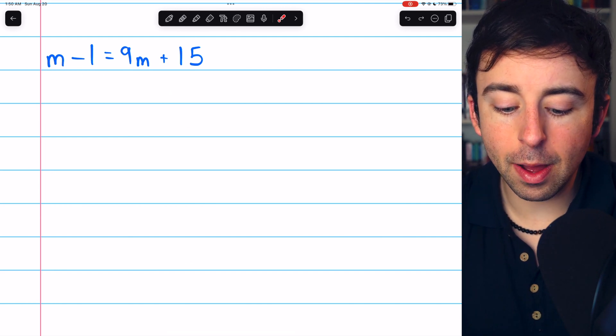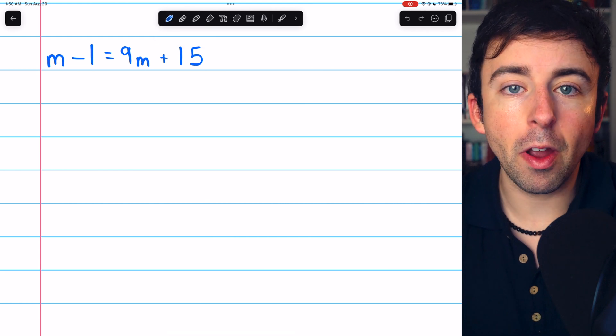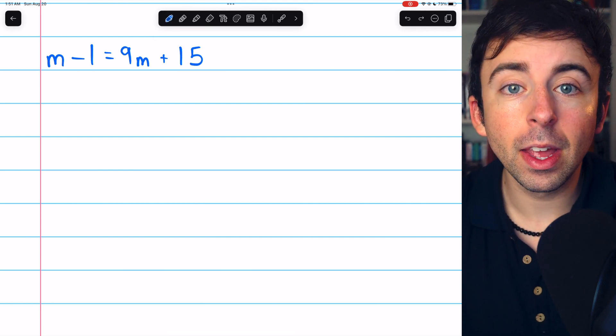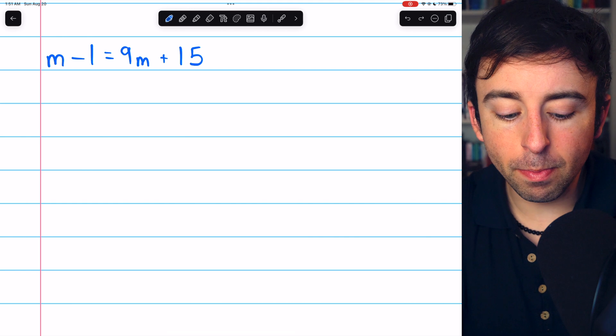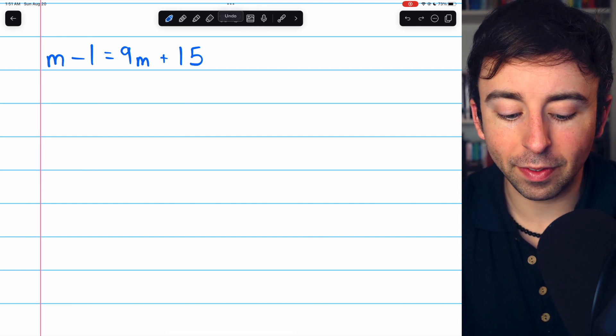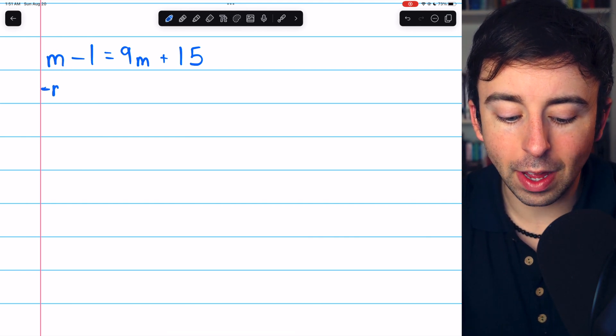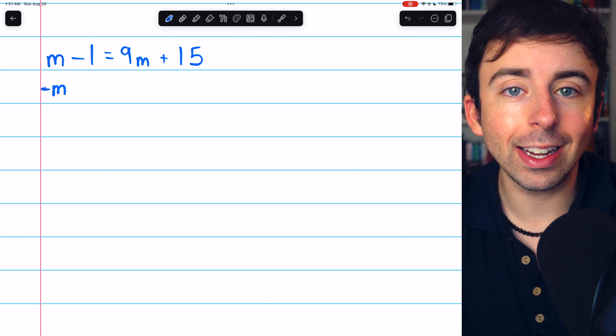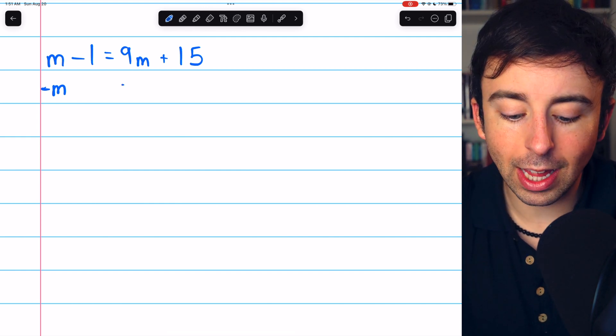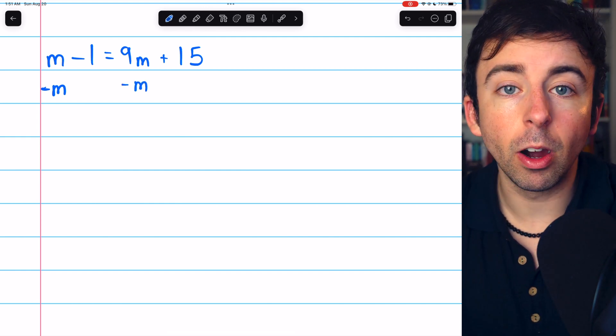Let's do one more example together. m minus 1 equals 9m plus 15. In this case, I'll get all of our variables on the right side. So to do that, we'll have to move this m on the left side. The opposite of adding m is to subtract m. So we'll subtract m on the left, and we'll subtract m on the right.